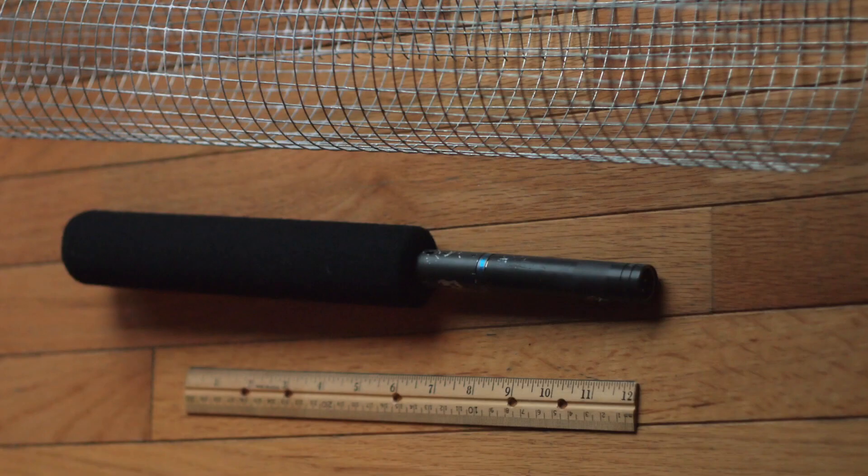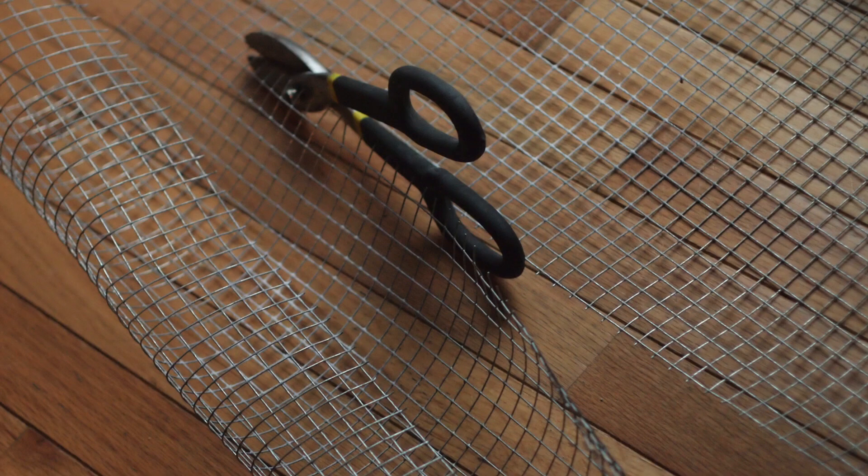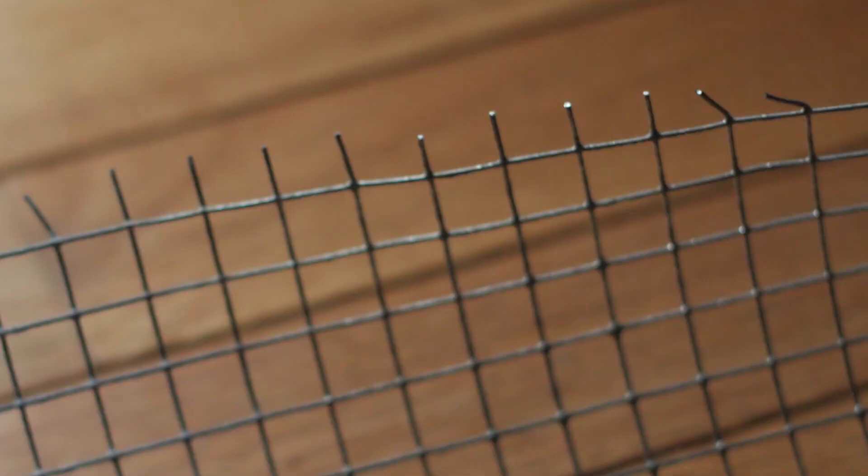I started by laying out the mic next to the hardware cloth so I knew how long to make it. Then I cut the hardware cloth to form a cylinder that would fit around the mic. I left these long ends on the wire because I thought I could use them to help close the thing together, which was a good idea.